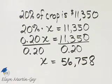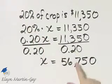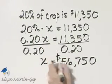And what does that mean? So once again, we'll have 56,750. That means that 20% of this potential crop value is 11,350.